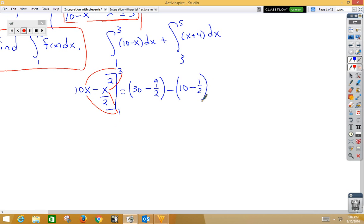Now we could make like fractions. We have 60 halves minus 9 halves is 51 halves on the left side. On the right side, we have 20 halves minus 1 half, which is 19 halves. Subtracting gives us 32 halves or 16 as the answer for our first integral.